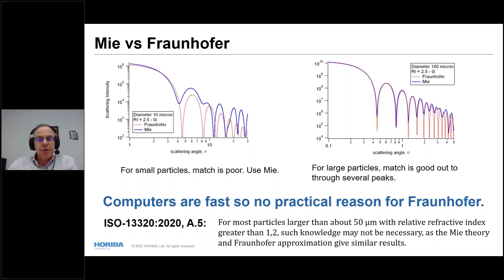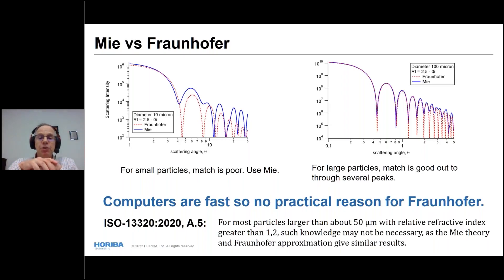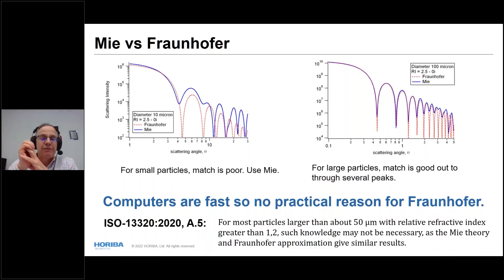These days, fast computers mean there's no practical reason to avoid Mie. ISO 13320 states that for particles larger than about 50 microns with a relative refractive index m greater than 1.2 — that's the particle refractive index divided by the liquid refractive index — knowledge of optical properties may not be necessary as Mie and Fraunhofer give similar results.